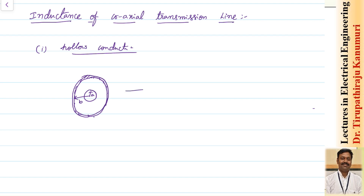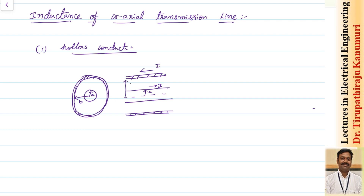In the side view, the conductor will be like this: there is a hollow conductor at a distance A from the center, carrying the current in the positive direction. The outer conductor cross-section is at a distance B from the center, carrying current I in the opposite direction.